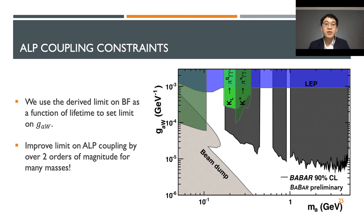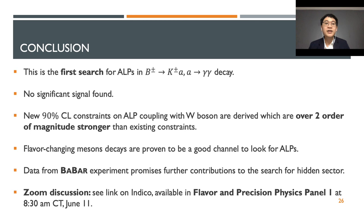Finally, we derive the limit on axion coupling to W-boson from the derived branching fraction limit as a function of lifetime. We can do so because the coupling can be used to predict both branching fraction and lifetime. From the figure, we can see that we excluded a lot of regions, and for many masses apart from the standard model meson resonance interval, we improved the coupling limit by over two orders of magnitude. If we invert the coupling, we can have a rough idea of what the mass scale of the new physics is, which is about 10 to 100 TeV.